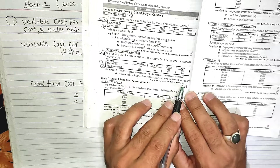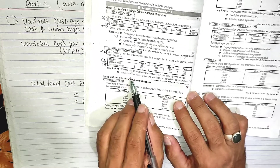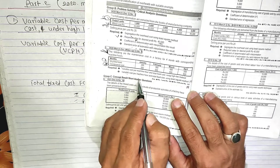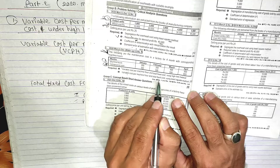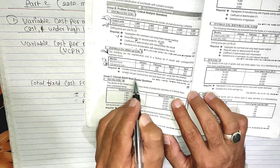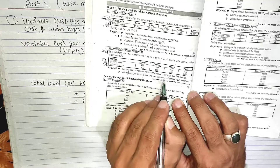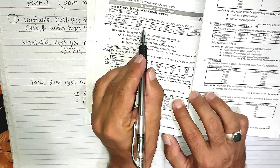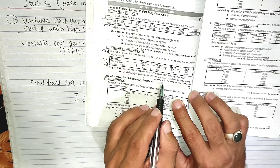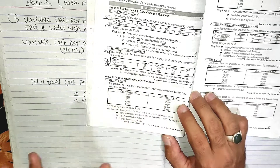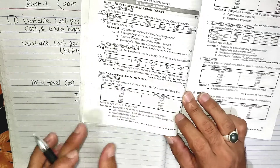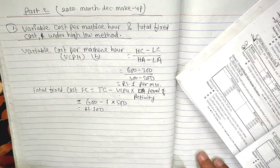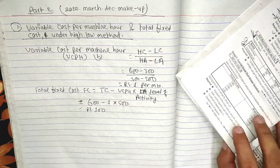Now we do this under the least square method. We will denote fixed cost by A, and apply the formula. Now we have the next question at the bottom with one number.